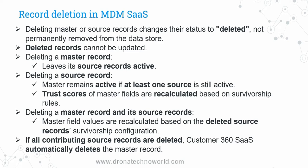Record deletion in MDM SaaS and on-premise MDM is totally different. When we delete a master or source record in MDM SaaS, the record status changes from active to deleted. In the on-premise version, we have a column called hub state indicator with values 1, -1, and 0. In MDM SaaS, we have the field called record status. Whenever we delete a record in MDM SaaS, the record will not be physically deleted from the data store — it will still be there, and only the status changes from active to deleted.